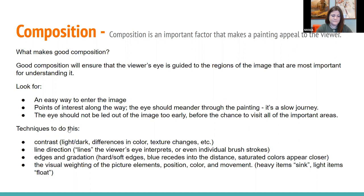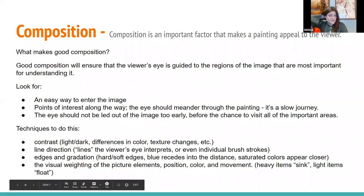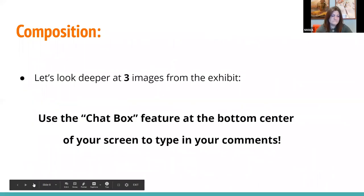A good composition should not only be pleasing to the viewer, but should ensure their eye is guided to the regions most important for understanding it. Many artists are taught that composition should allow an easy way for the viewer to enter the image and should not let them out too early before they've visited all the important areas. The viewer should enjoy a slow journey that meanders through points of interest. Techniques include contrast — light versus dark, color changes, or texture differences — line direction (real solid lines or perceived lines), edges and gradation such as hard versus soft edges, and visual weighting: position, color, and movement, where heavy items sink and light items float.